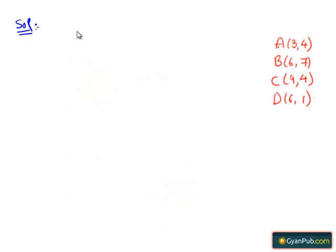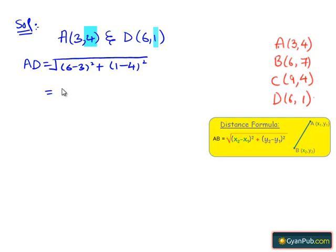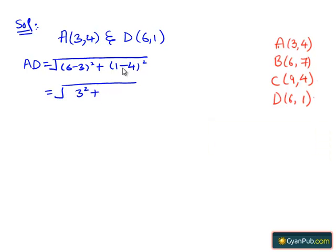Taking the fourth pair of points A(3, 4) and D(6, 1), by applying the distance formula we get AD = √((6−3)² + (1−4)²) = √(3² + (−3)²) = √(9 + 9) = √18 = 3√2.